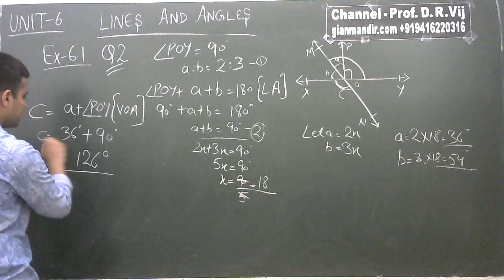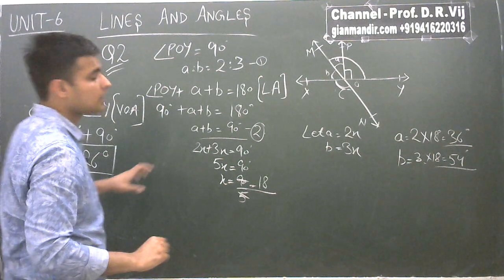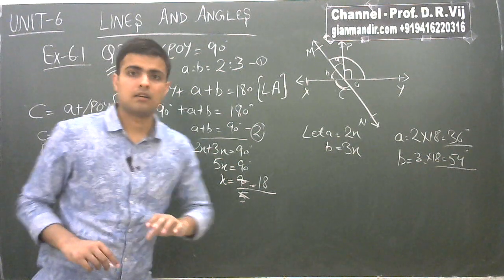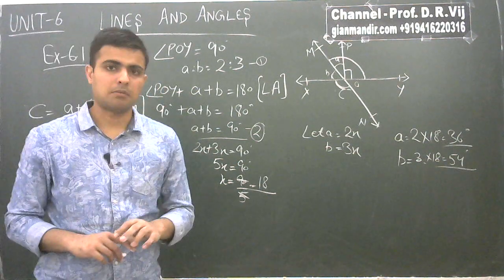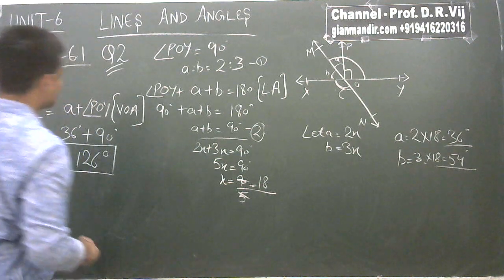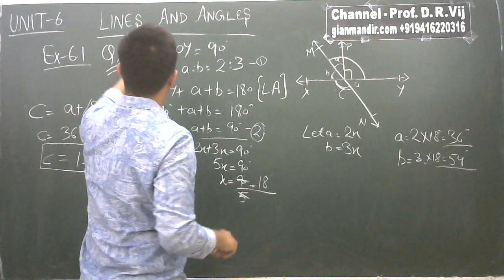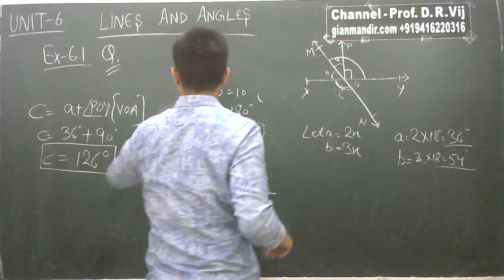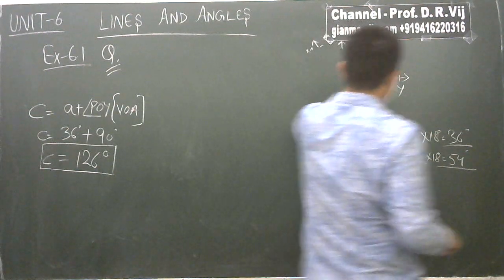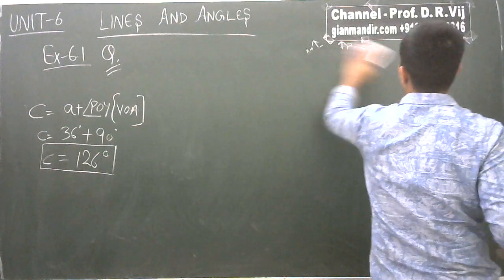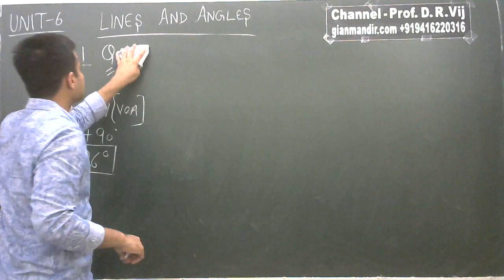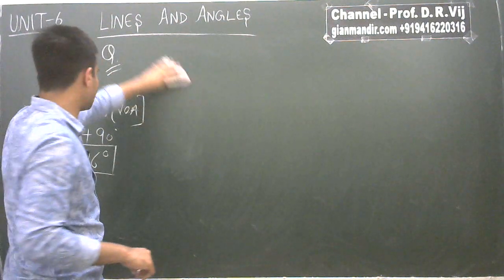So the value of C is 126 degrees. This was a very easy question. This was question number 2. Now we will move on to question number 3 of this exercise.